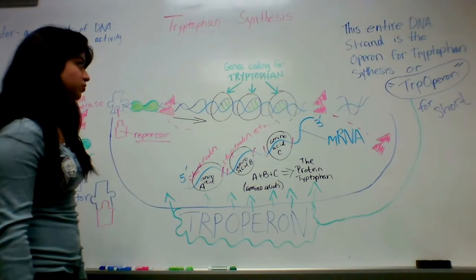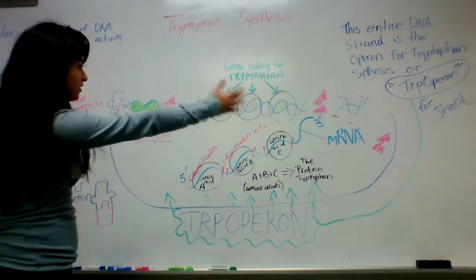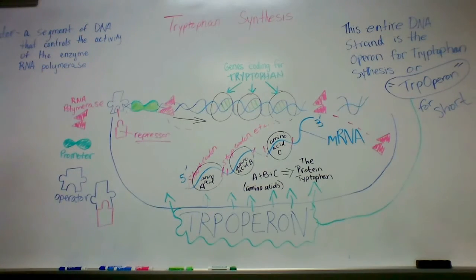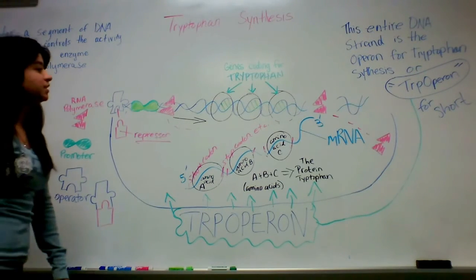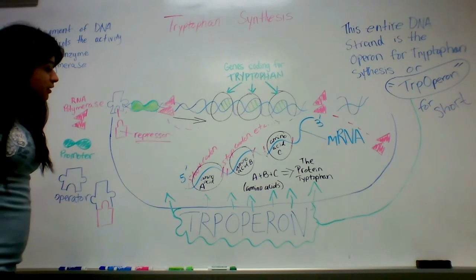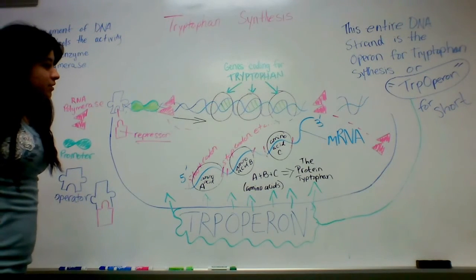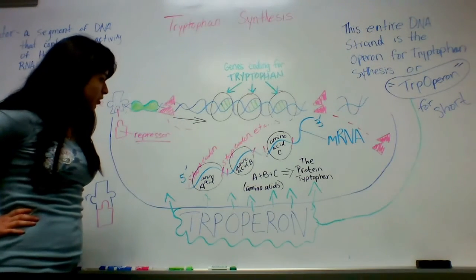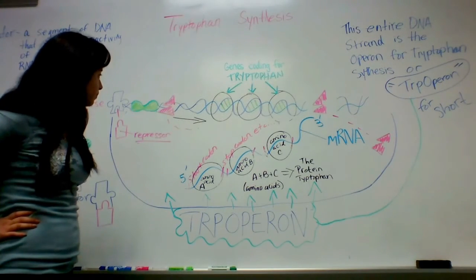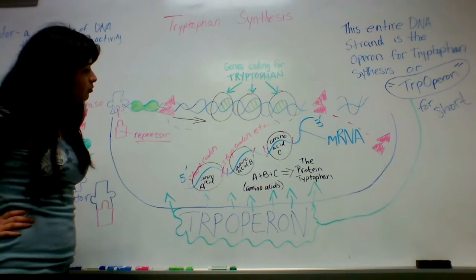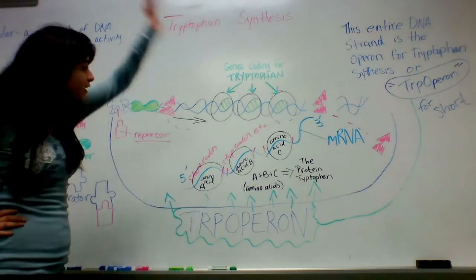This entire DNA strand is the TRP operon, so it's pretty simple if you stare at it long enough. It's in 5 to 3 prime, and that's the operon — the whole thing is the operon.